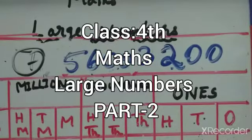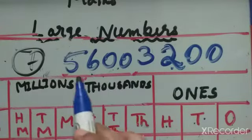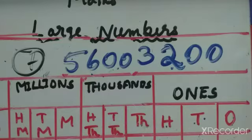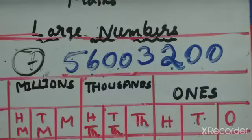Now 7th question. The number is 5,600,3200 — a very big number. Now we have to write that in the international place value chart.